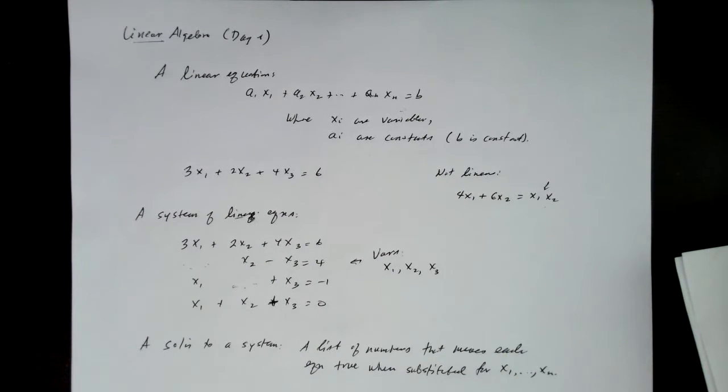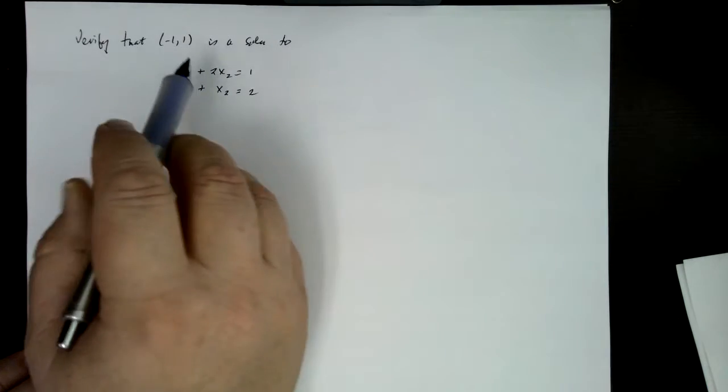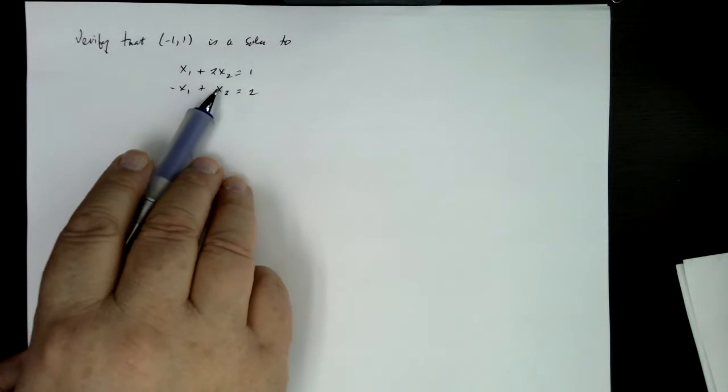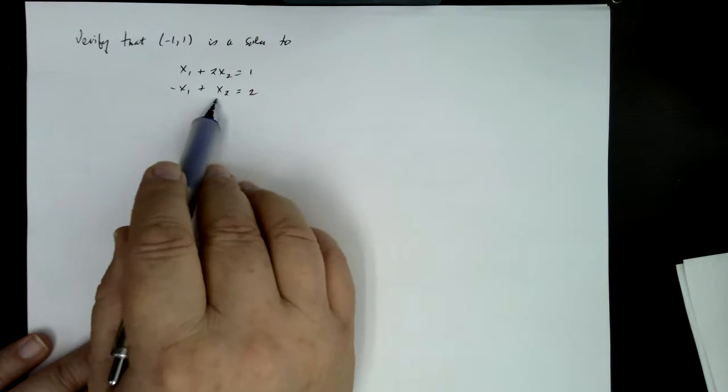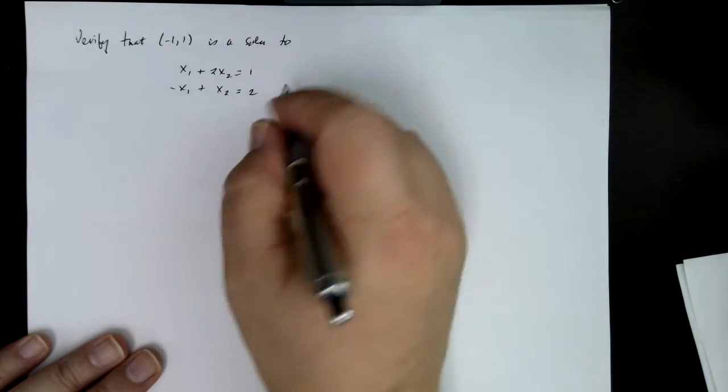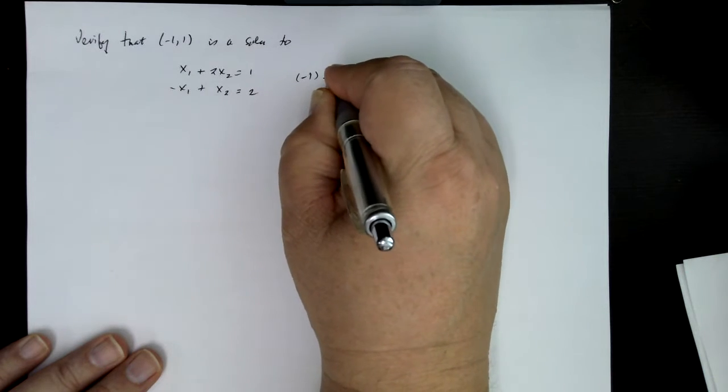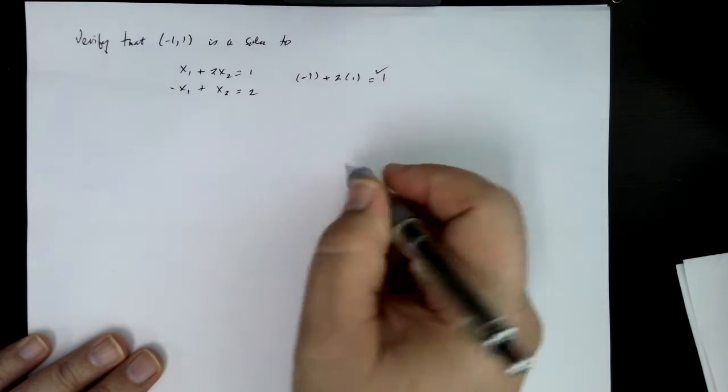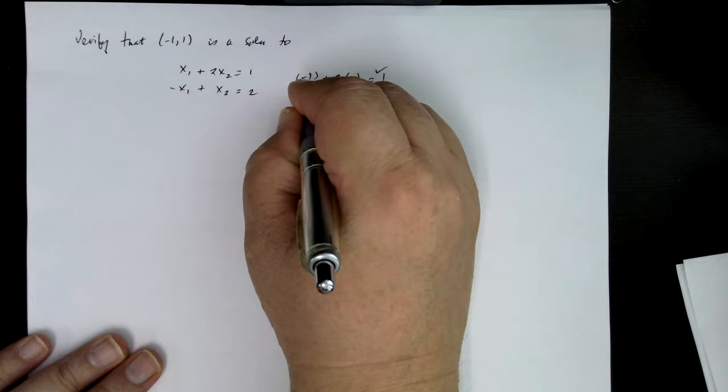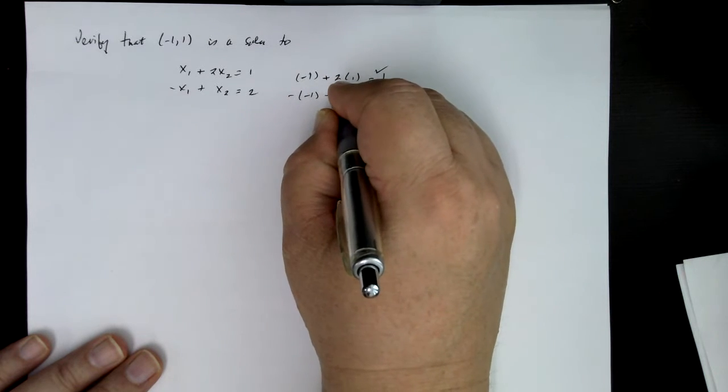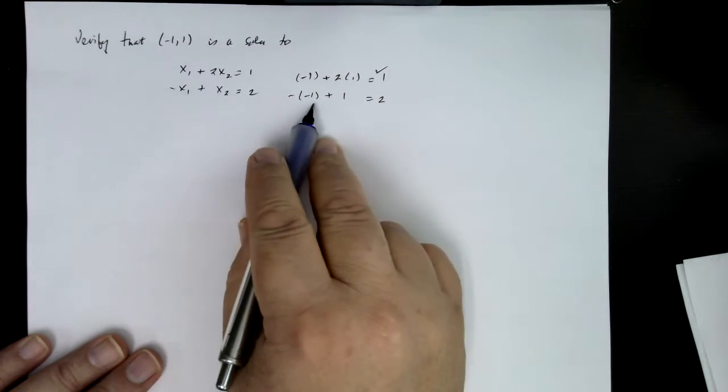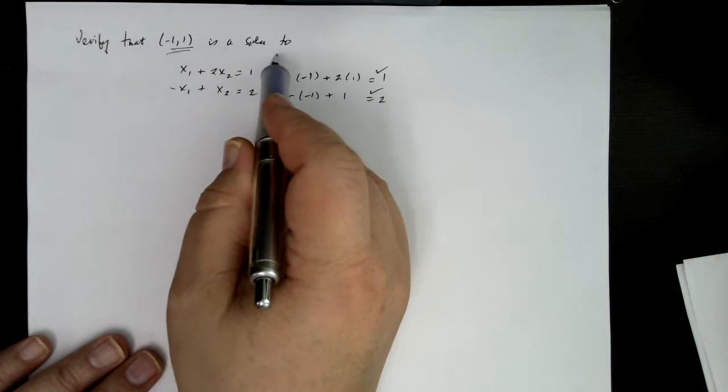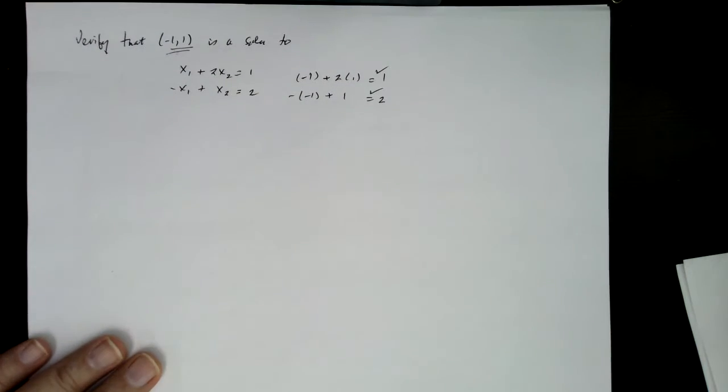Let's verify that the solution x1 equals minus 1 and x2 equals 1 is a solution to the system. So that means if you substitute these numbers in, you get a true statement. If we substitute minus 1 in for x1 plus 2 times 1 for x2, what do we get? We get 1, so that's verified, and then the bottom we have minus minus 1 plus positive 1 equals 2, and we verify that that is equal to 2. So therefore this list is a solution to the system.